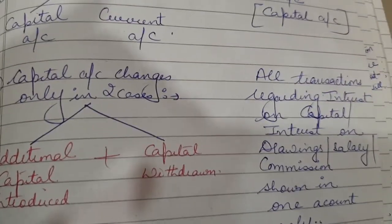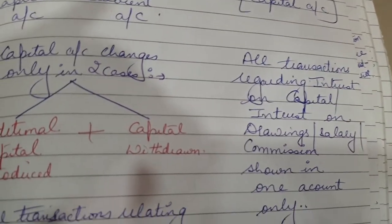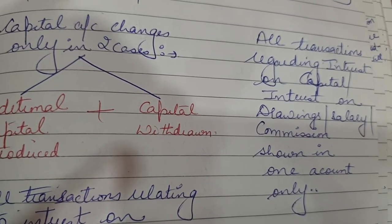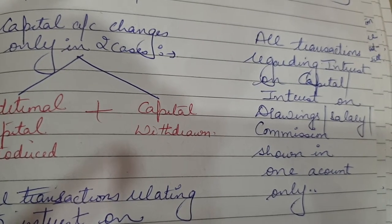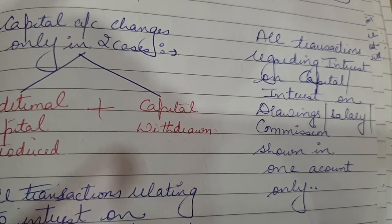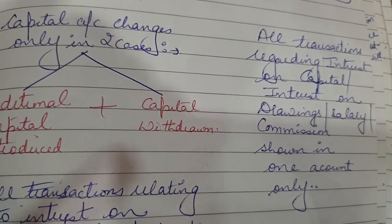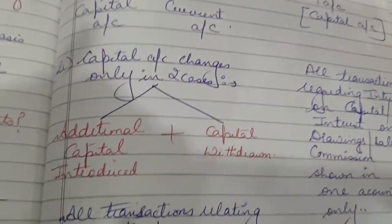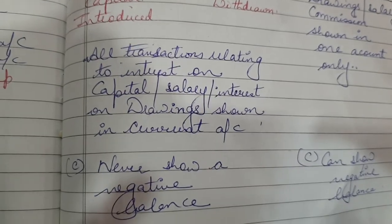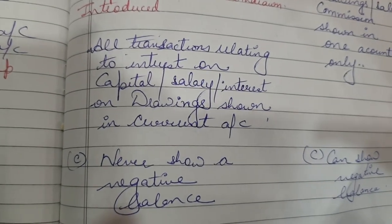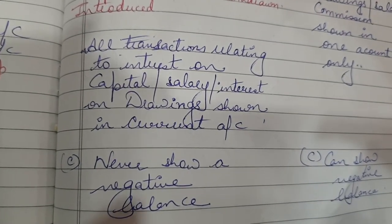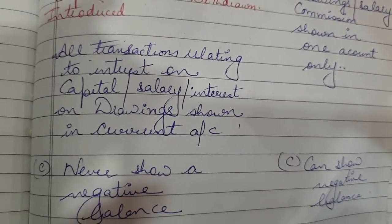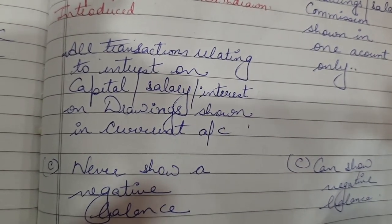All transactions relating to interest on capital, salary, and interest on drawings are shown in the current account under fixed capital. But in case of fluctuating capital, since there is only one account, all transactions regarding interest on capital, interest on drawings, salary, and commission are shown only in the capital account. Also, fixed capital account never shows a negative balance, but fluctuating capital account can show a negative balance.